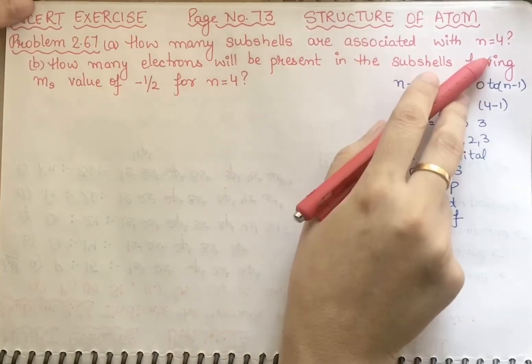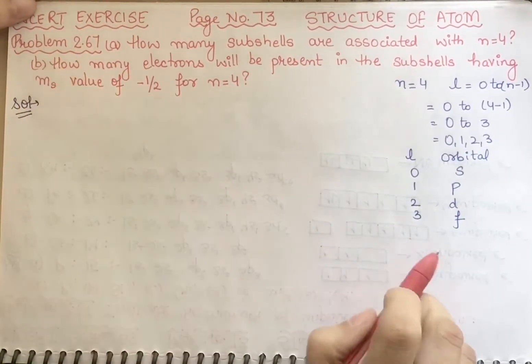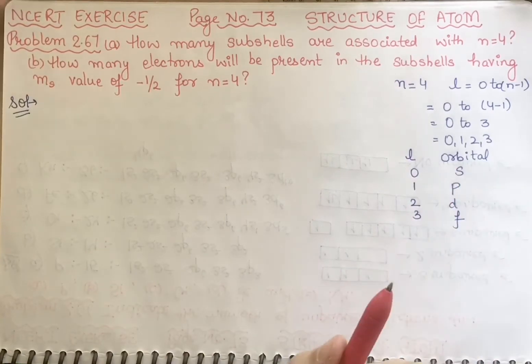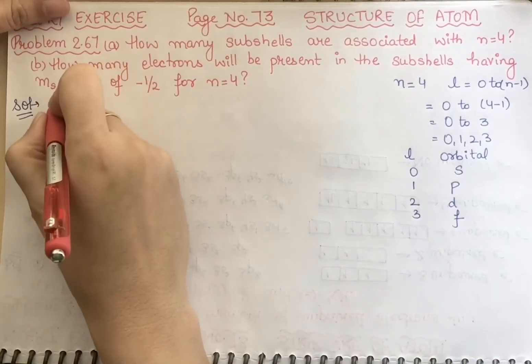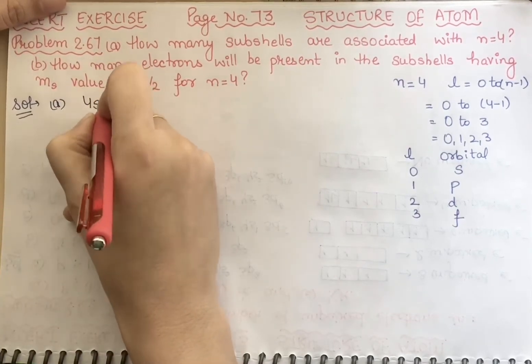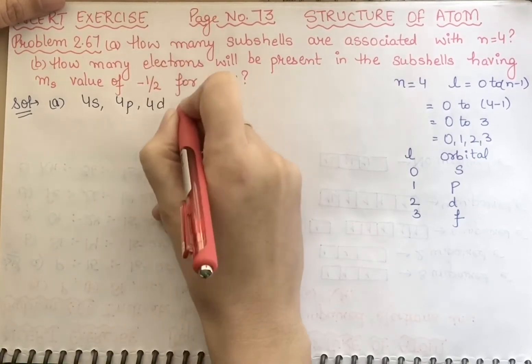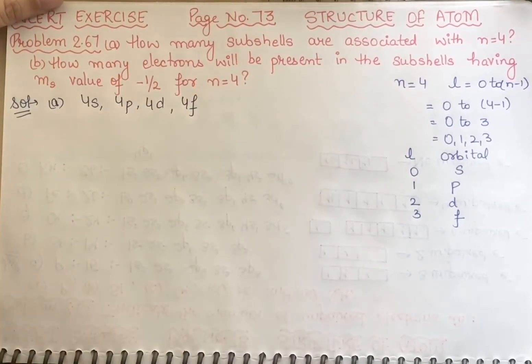So we have n equal to 4. What can we say? That we have mainly 4 subshells which exist. Which subshells can be equal to you? First you will have 4s exist, next 4p, then 4d, and last one 4f exist. Clear?